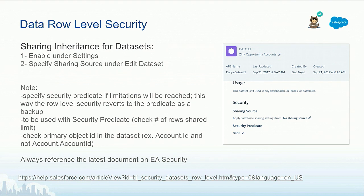It's important to understand that you should look at sharing as an option first, then consider security predicates, or use both together. For example, most users may work fine with sharing rules, but for those who exceed the row limit, security predicates can kick in with criteria that fits their access needs.